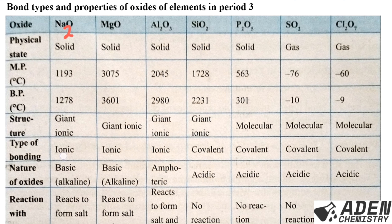We can see the structures and type of bonding: sodium oxide, magnesium oxide, and aluminium oxide have ionic bonding because metals react with oxygen - when metals react, the type of bond is ionic. When we go to silicon, phosphorus, sulfur, and chlorine, the type of bonding is covalent because the reactions involve non-metals. The structure changes from giant ionic structure to giant covalent or giant atomic structure, and then finally to molecular structure.